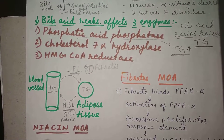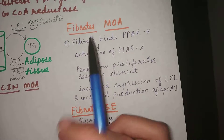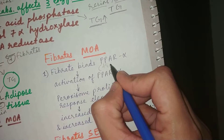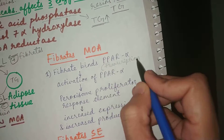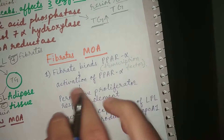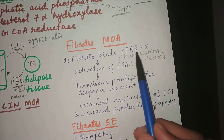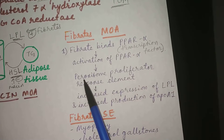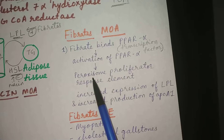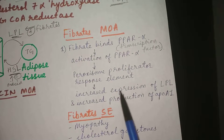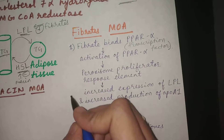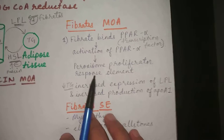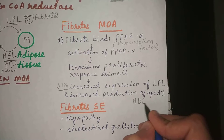In more detail, fibrates bind with PPAR-alpha, which is a transcription factor. This fibrate-PPAR-alpha combination activates the peroxisome proliferator response element, which causes increased expression of lipoprotein lipase — decreasing triglyceride levels. Additionally, this process increases production of apolipoprotein A1, which is a major component of HDL, so fibrates also cause an increase in HDL.